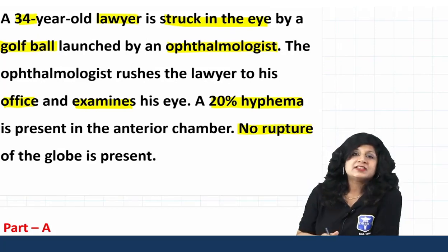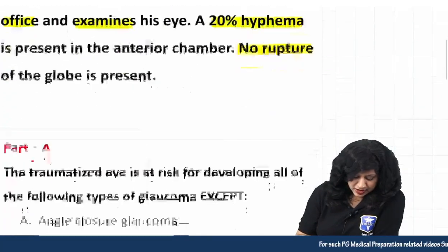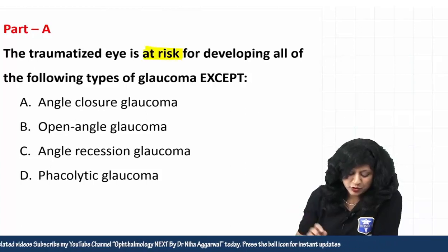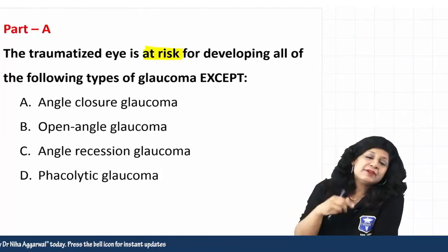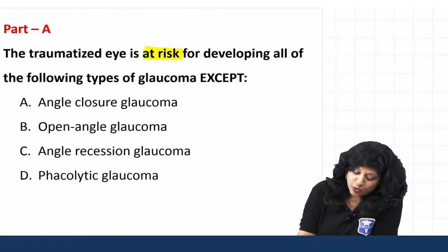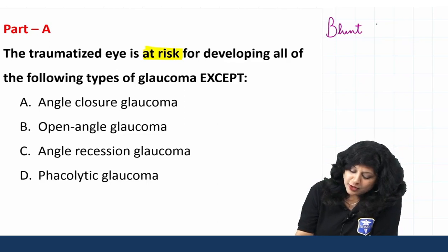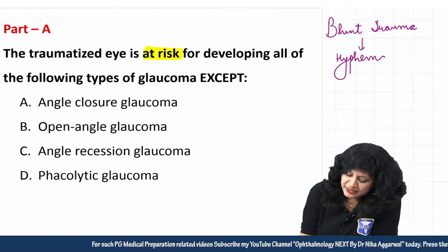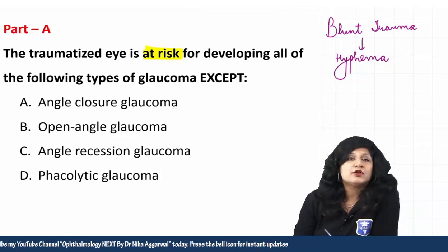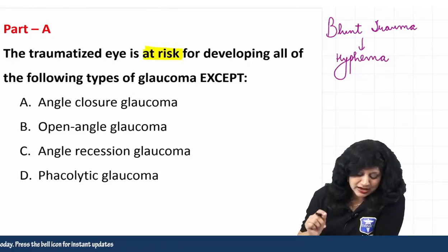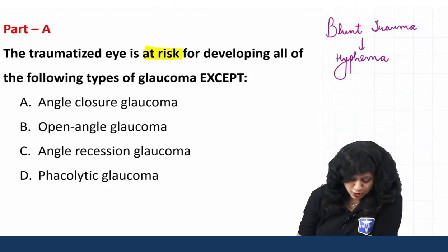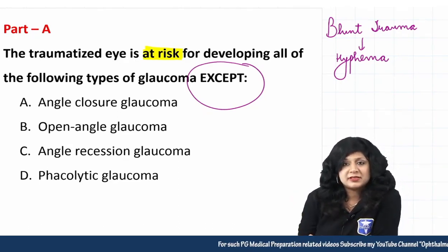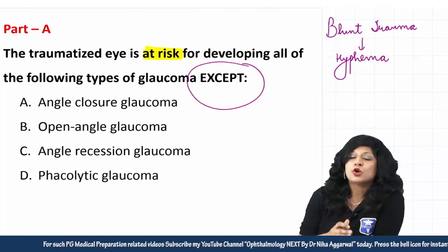This question has three parts that we are going to do in three different sessions. Part one says: the traumatized eye is at risk for developing all of the following types of glaucoma except. Analyzing this case — a case of blunt trauma with 20% hyphema, meaning blood in the anterior chamber — what kinds of glaucoma can develop? The options are: angle closure glaucoma, open angle glaucoma, angle recession glaucoma, and phacolytic glaucoma.